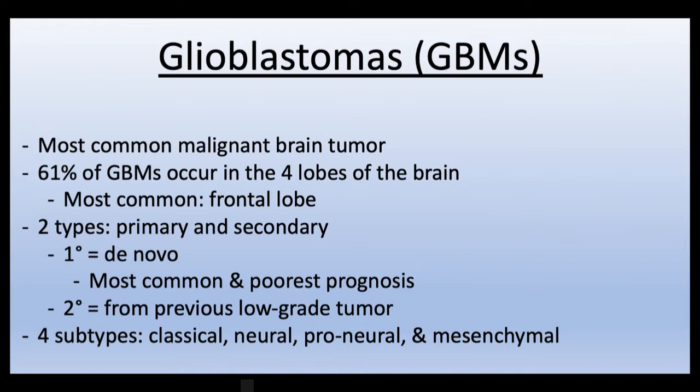Glioblastomas are the most common malignant brain tumor. Over 61% of them occur within the forebrain lobes, with 25% of those 61% occurring within the frontal lobe.